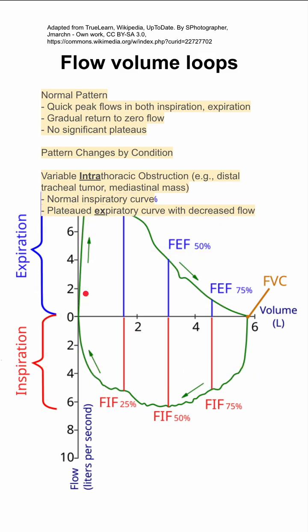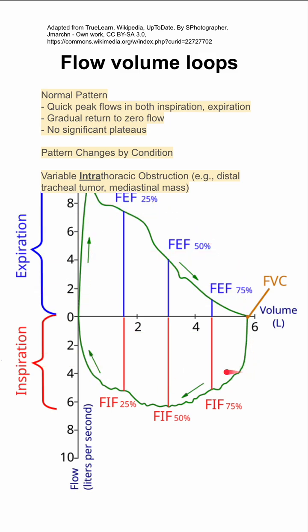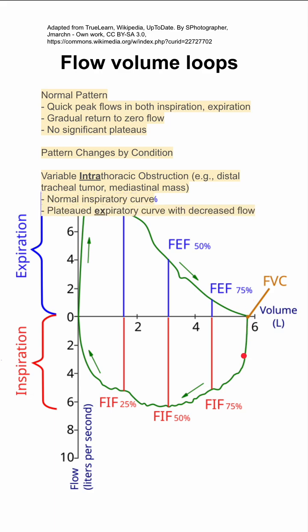This creates a characteristic box-like appearance. If you have a plateau on the inspiratory phase and another plateau on the expiratory phase, you're making two plateaus — and it kind of looks like a box.